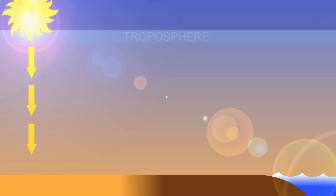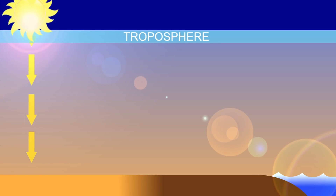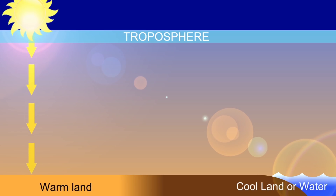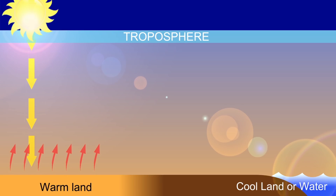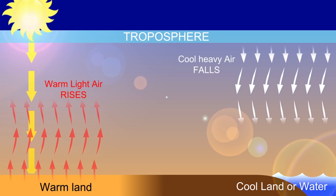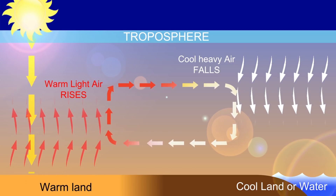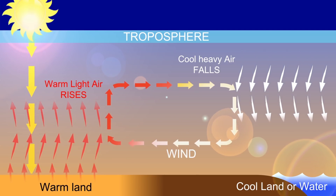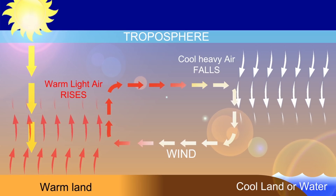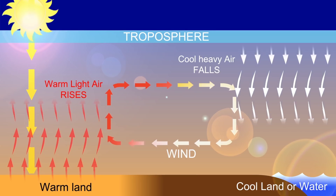Wind is simply air in motion. It is caused by the uneven heating of the Earth's surface by the Sun. Because the Earth's surface is made from very different types of land and water, it absorbs the Sun's heat at different rates. One example of this uneven heating can be found in the daily wind cycle.